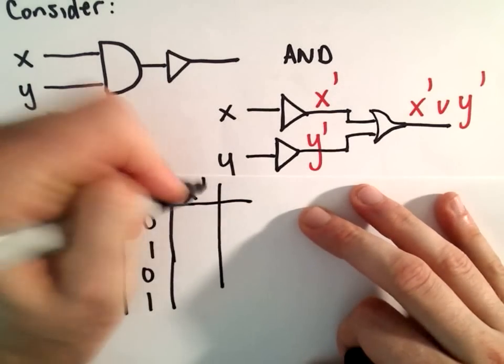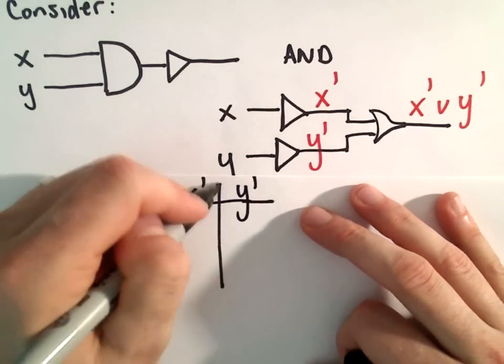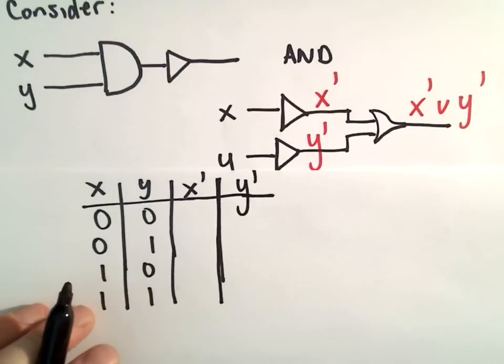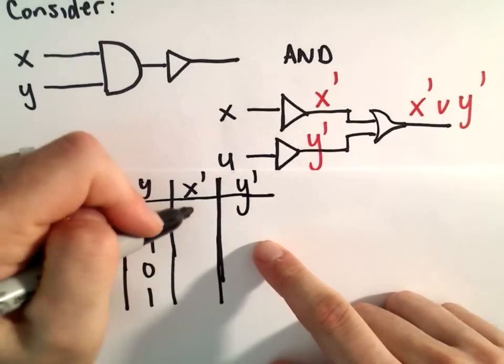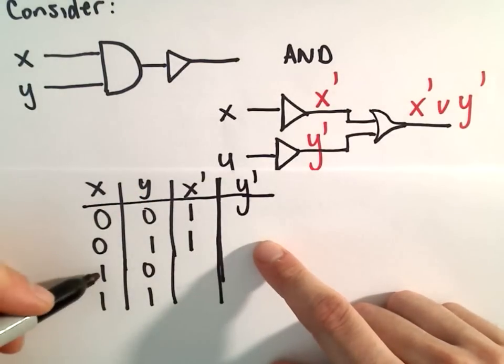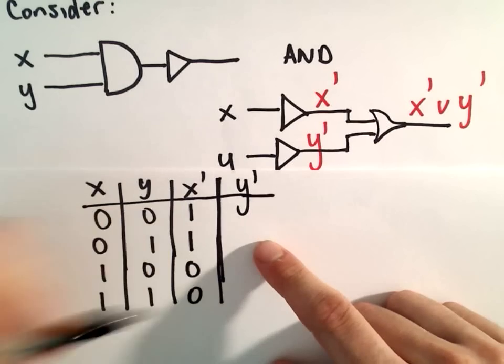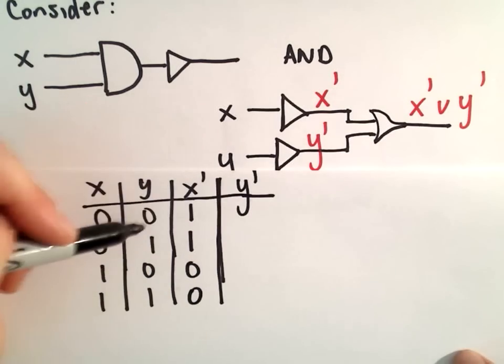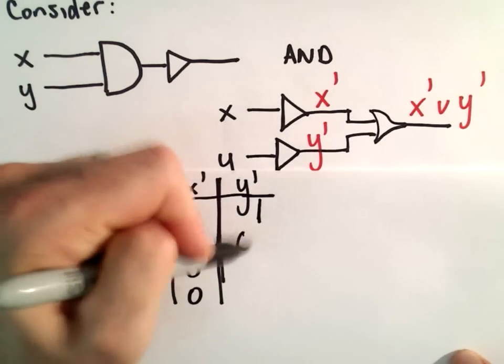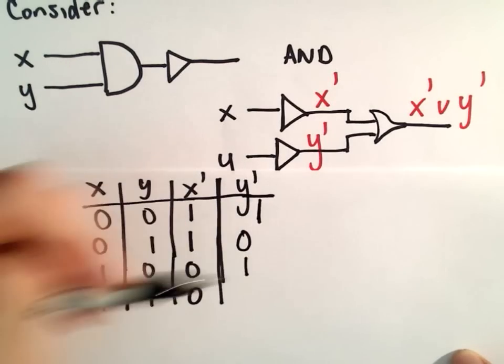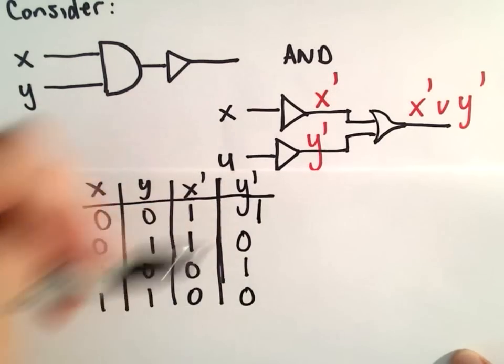We've got to do not x and separately not y. X was 0, 0, so we'll get 1, 1, and then x was 1, 1, so we'll get 0, 0. Y was 0, so it'll turn into a 1. The 1 will become a 0. The 0 will become a 1, and the 1 will become a 0.